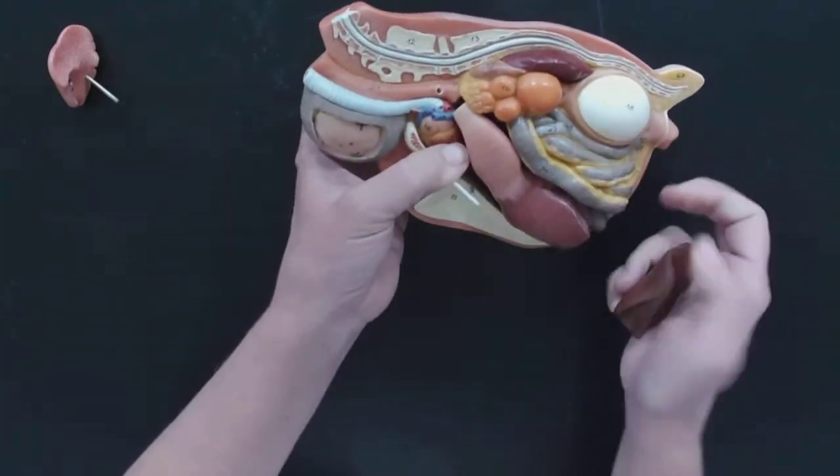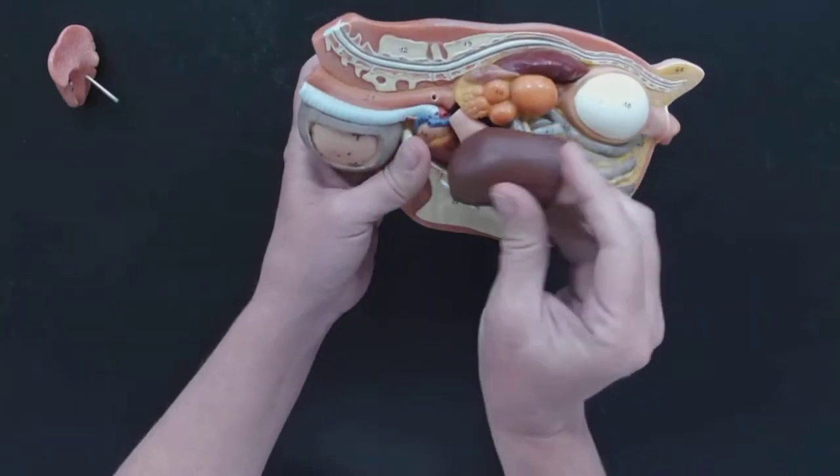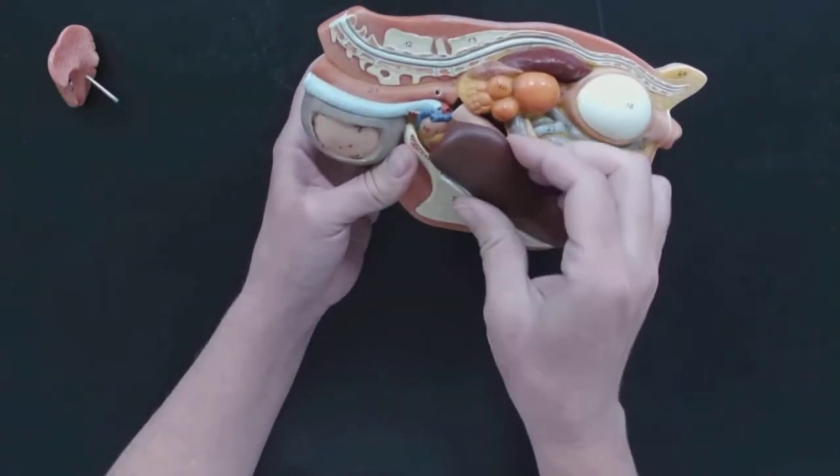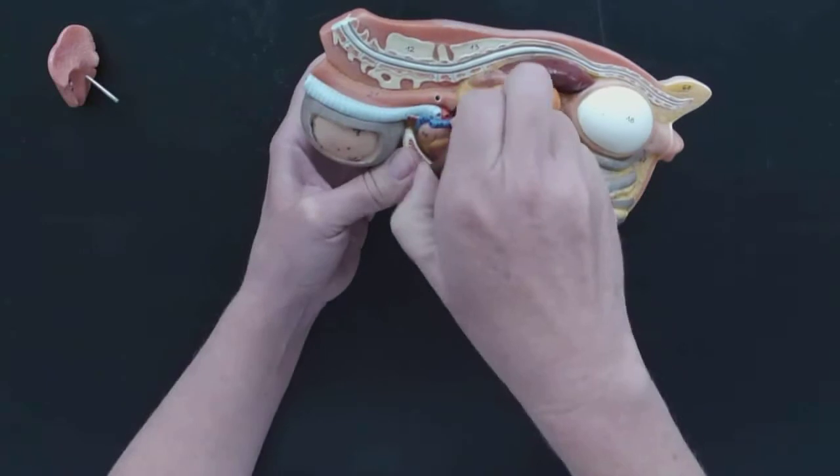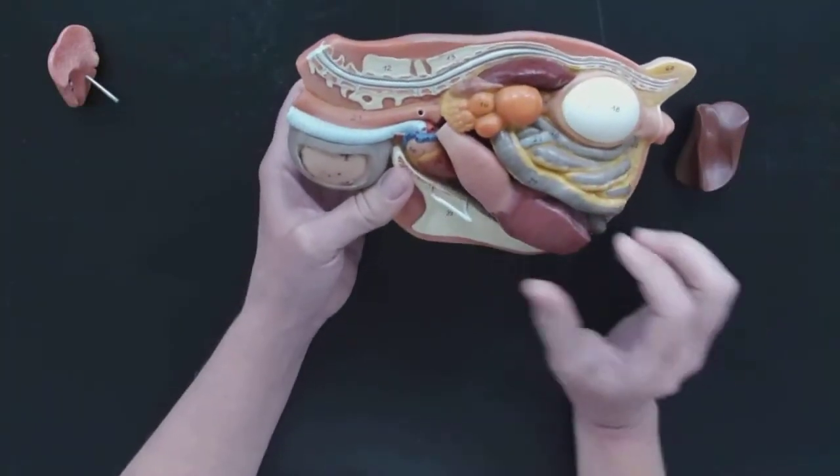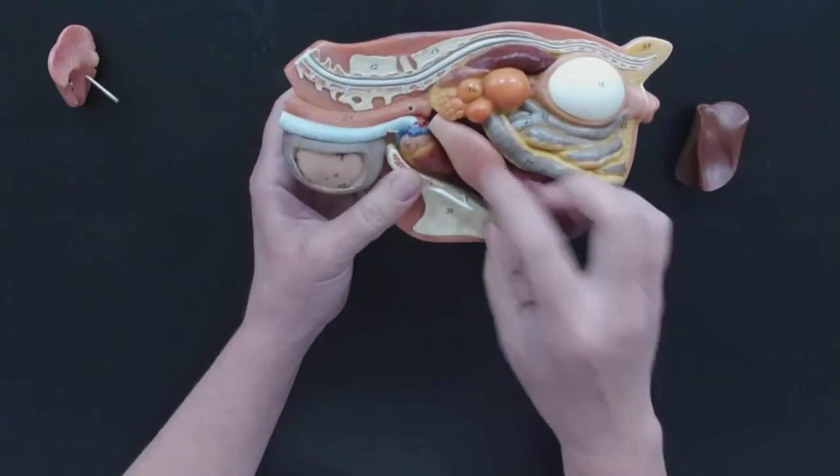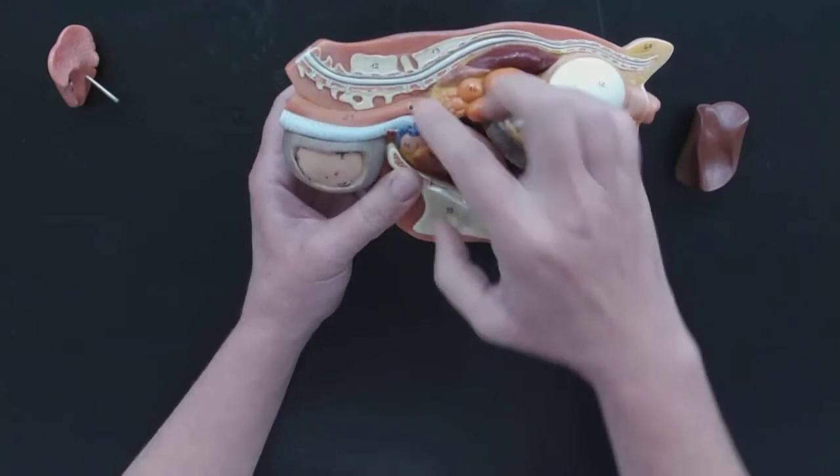So the esophagus is going to go down, and it's going to connect to the proventriculus. This is the equivalent of a stomach. So here's my liver, that came off. Let's take them off again. I'm just going to put them to the side.